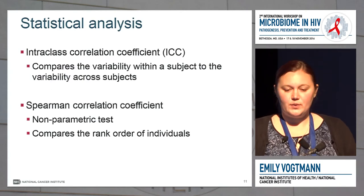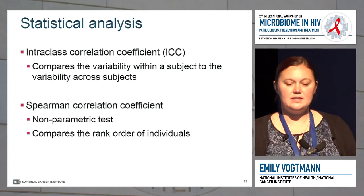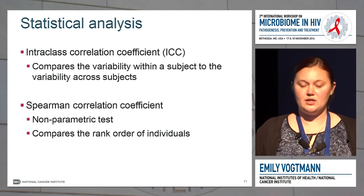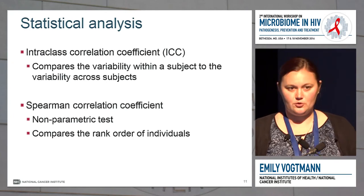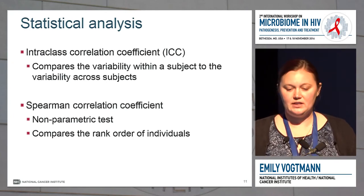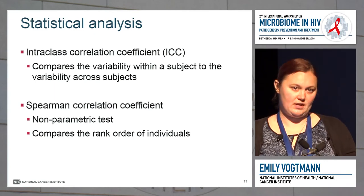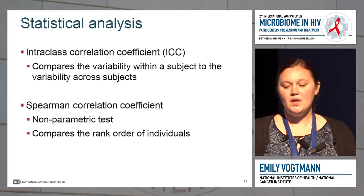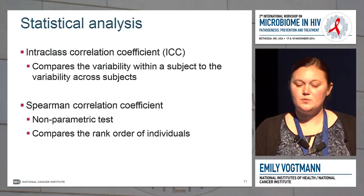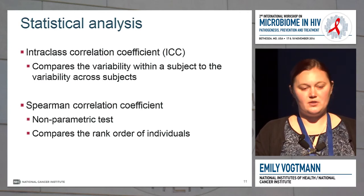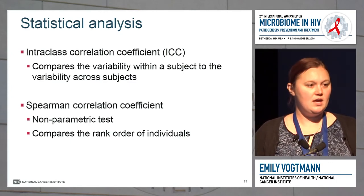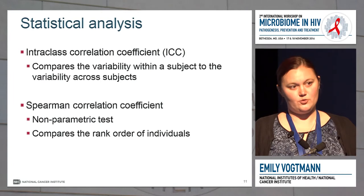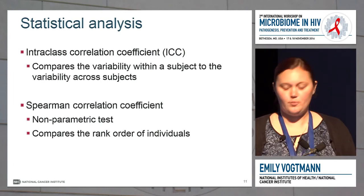For our analysis, we calculated intraclass correlation coefficients, which compare the variability within a subject to the variability across subjects — looking at intraindividual variability to see how different the samples are within each person. For accuracy, we also looked at the Spearman correlation coefficient, which is a nonparametric test that compares rank order. For example, if someone in one method had a high number of OTUs, are they consistently high? It's not the actual value of OTUs, but the rank within the other participants.